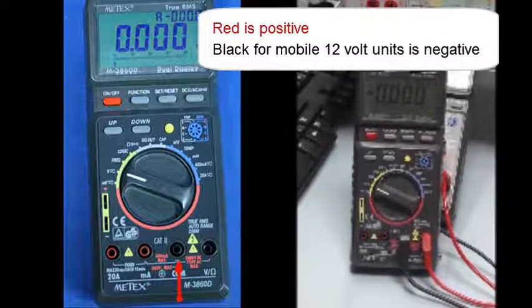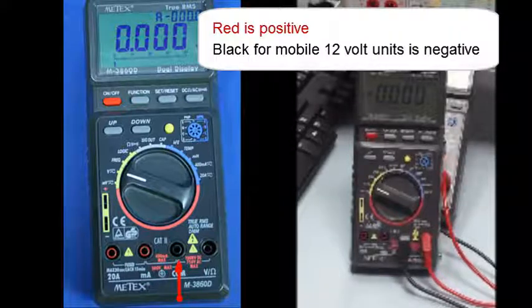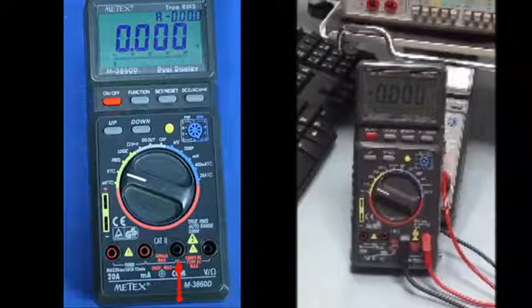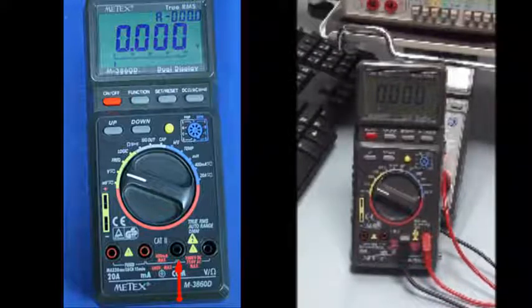So now we have some color issues that we have to be concerned with. All multimeters use the black for commonality. Red will be the point of measure in which we wish to use, such as voltage, resistance, and current.